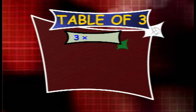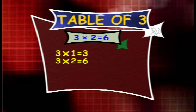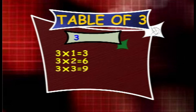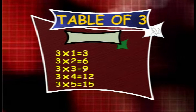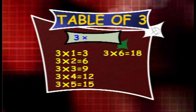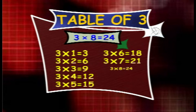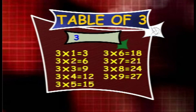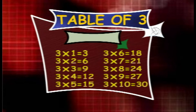Table of 3. 3 1s are 3, 3 2s are 6, 3 3s are 9, 3 4s are 12, 3 5s are 15, 3 6s are 18, 3 7s are 21, 3 8s are 24, 3 9s are 27, 3 10s are 30.